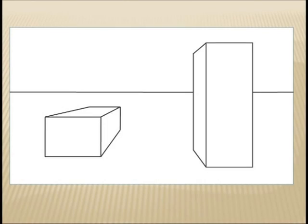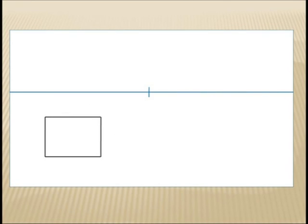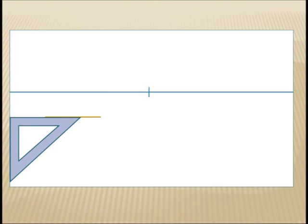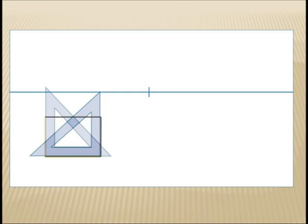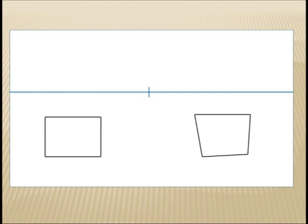For our demonstration today, we will be creating basic cube shapes. Start by drawing a square or a rectangle. Use your triangle and the edge of the paper or the horizon line to make sure it is square. Continue to use the triangle on all sides to ensure a well-constructed shape. The rest of our three-dimensional cube will be built from this shape. If you start with a sloppy shape, your whole drawing will be sloppy.